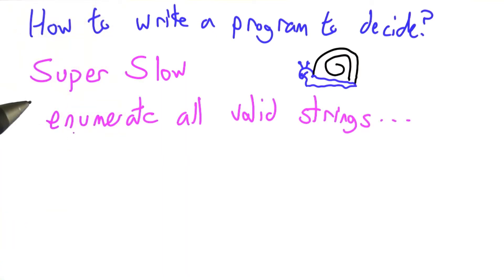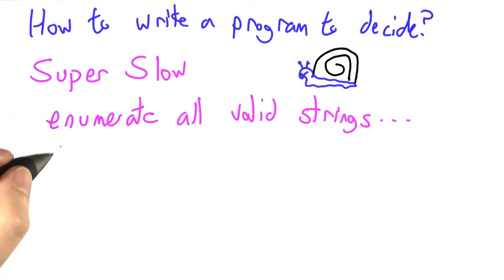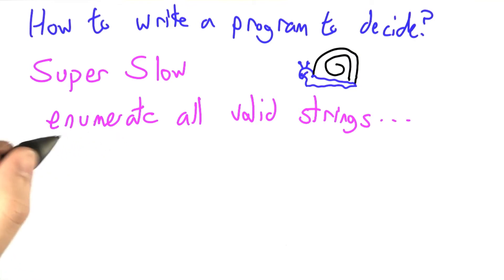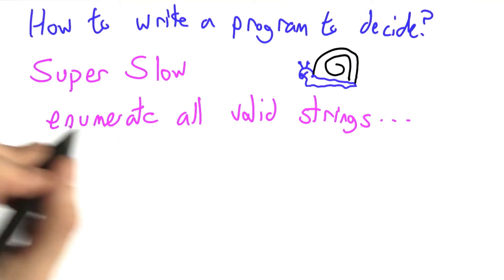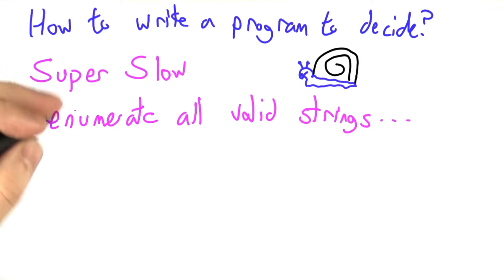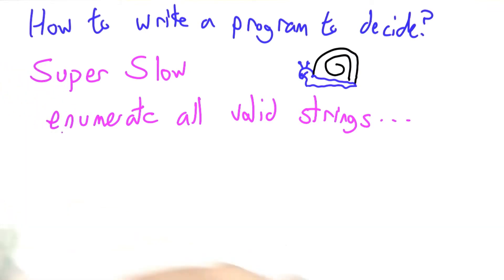If it is, you win. If not, your string must have been invalid. Unfortunately, we mentioned earlier that often a finite grammar has an infinite number of strings, so spending an infinite amount of time to enumerate them all is probably not feasible — but let's try it anyway.